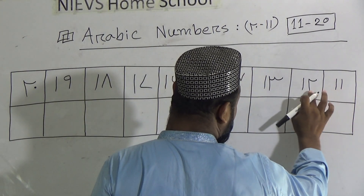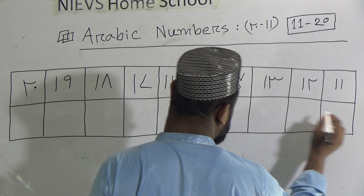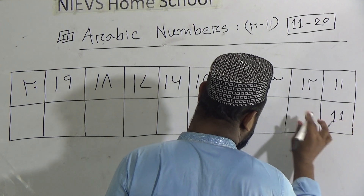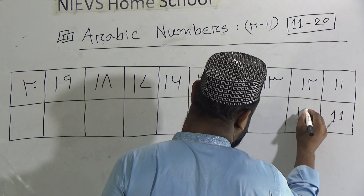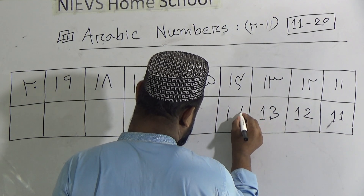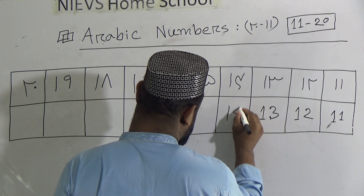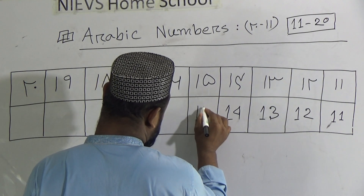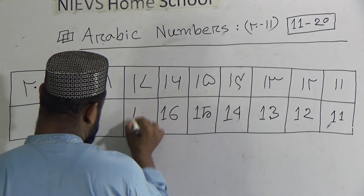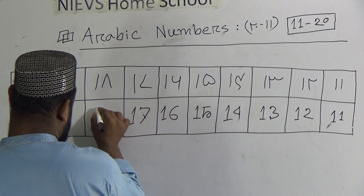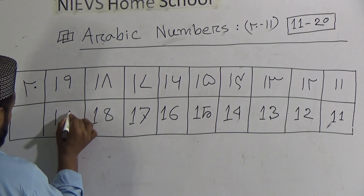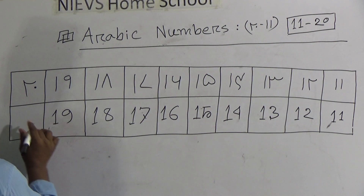Now I will write down the English equivalents. This is eleven, this is twelve, this is thirteen, fourteen, fifteen, sixteen, seventeen, eighteen, nineteen, and the last one is twenty.